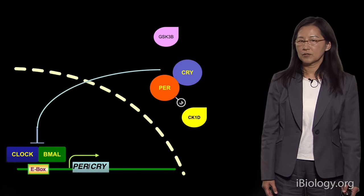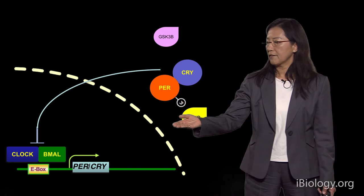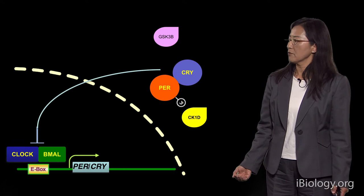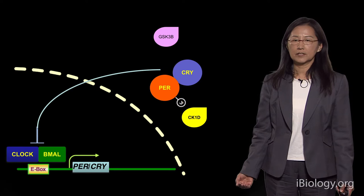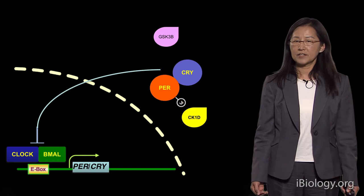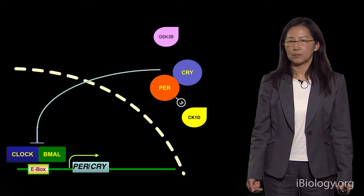Before I start, I want to first briefly remind you of the core molecular clock. For the mammalian system, there are two major transcription factors, CLOCK and BMAL. They form dimers and bind to the promoter of clock-controlled genes. PERs and CRYs are the most well-studied clock-controlled genes. The protein levels of PERs and CRYs are tightly regulated, and PERs are regulated by casein kinase 1 delta. Another important kinase for circadian regulation is GSK3 beta. PERs and CRYs can form dimers and come back to suppress the transcription activation of CLOCK and BMAL, therefore forming a transcriptional feedback loop.